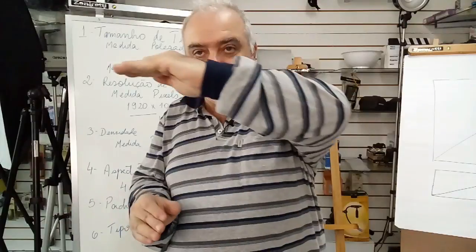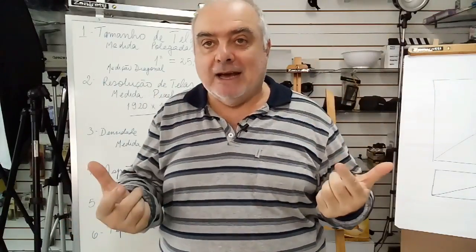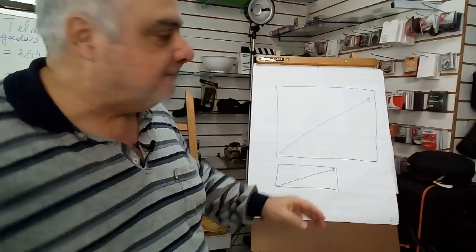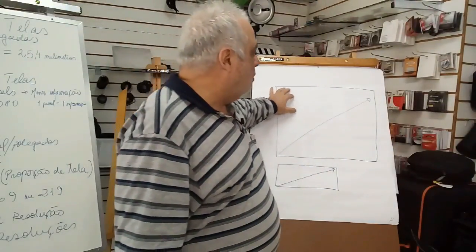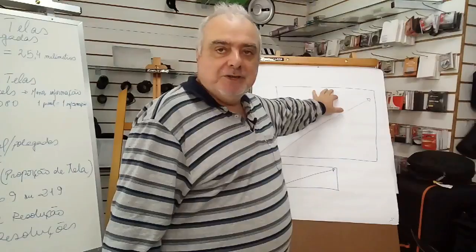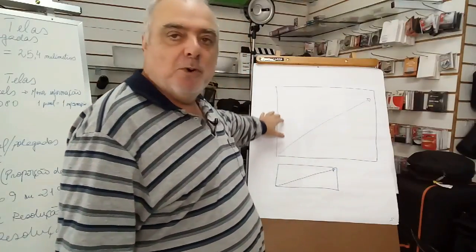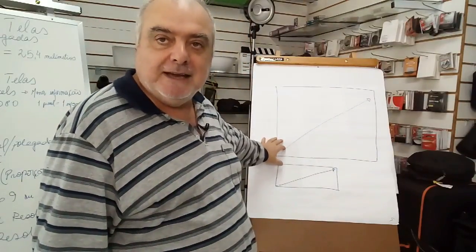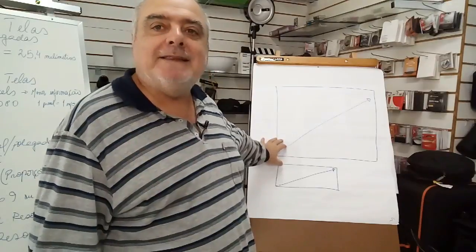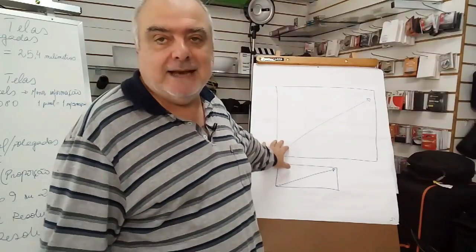Na horizontal, ela vai ter três partes na vertical. Entenderam? Então, aqui se eu tenho quatro partes, significa que eu tenho três partes. Então, uma tela 4.3 é mais ou menos, quero mostrar aqui para vocês. Ela tem um pouco mais na horizontal e um pouco menos na vertical. Significa que é mais ou menos uma tela quadrada, quase que quadrada.